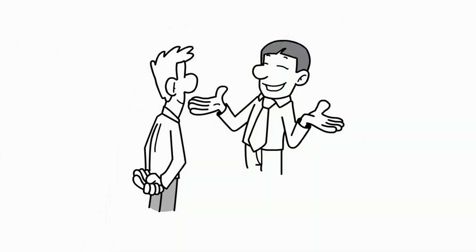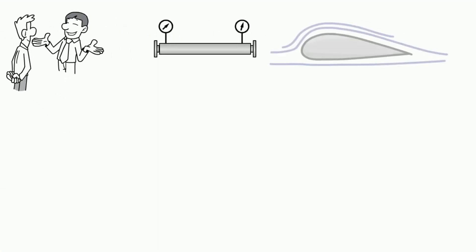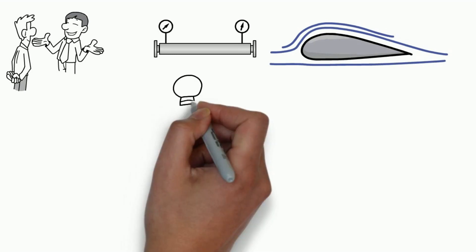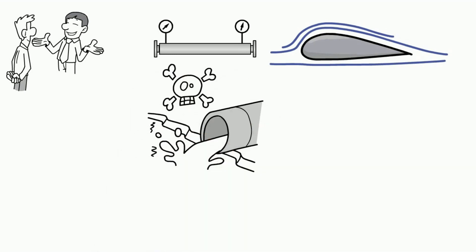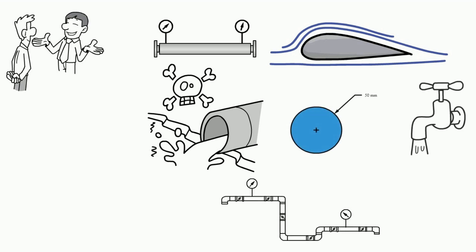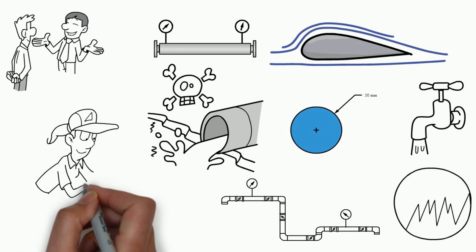In conclusion, the frictional head loss is an important concept in fluid mechanics that describes the loss of pressure that occurs as a fluid flows through a pipe or other conduit. It's impacted by factors like pipe diameter, length, flow rate, and wall roughness, and can be minimized through careful system design.